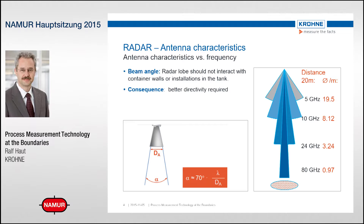At 5 GHz, the lobe diameter at 20 meters distance will be 20 meters, likely causing parasite reflections. To reduce lobe diameter, higher frequency is needed: 10 GHz provides approximately 8 meters, 24 GHz approximately 3 meters, and 80 GHz provides approximately 1 meter of lobe diameter at 20 meters distance — excellent performance for tall, slim tanks and also smaller tanks.